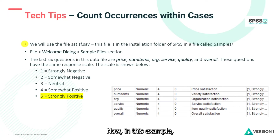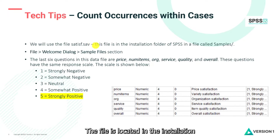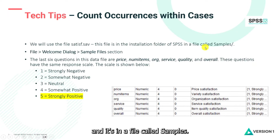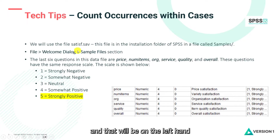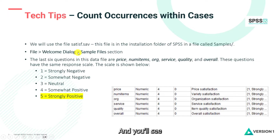In this example we're going to use a data file called satisfaction.sav. The file is located in the installation folder of SPSS in a folder called Samples. You can also access this file by going to the File menu, then the Welcome Dialogue, and selecting the sample files section on the left-hand side — you'll see a number of sample data files there.